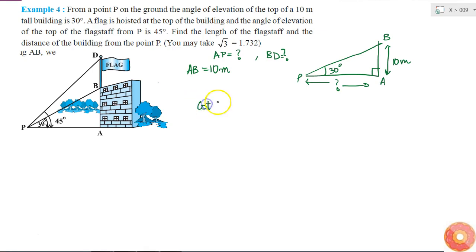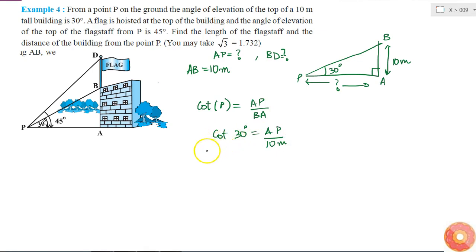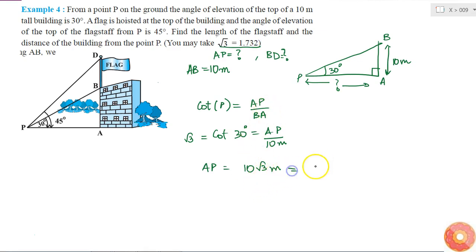Using cot of angle P: cot(P) = AP divided by BA. Angle P is 30 degrees, so cot(30°) = AP divided by 10 meters. Cot 30° is a standard value equal to √3, so AP divided by 10 equals √3, which means AP = 10√3 meters. Since √3 = 1.732, AP = 10 × 1.732 = 17.32 meters. Therefore, point P is 17.32 meters away from the building.